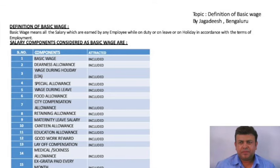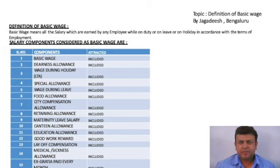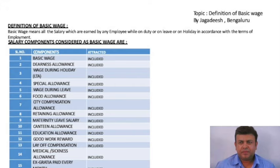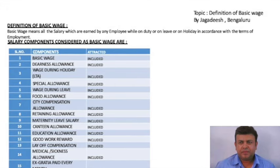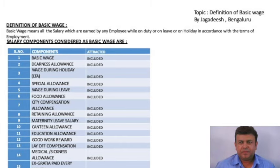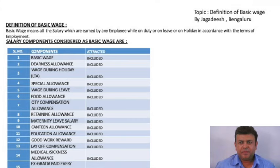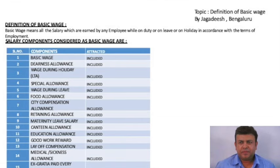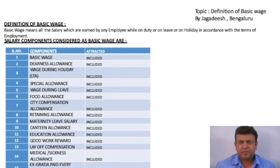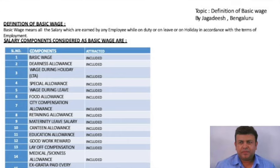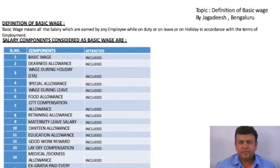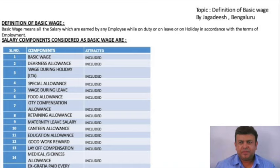Let us see which are the salary components considered as basic wage. Basic wage itself is considered as basic wage. Dearness allowance is considered as basic wage. LTA, that is wage paid during leave, is considered. Maternity leave salary is considered. Good work reward is considered. Lay-off compensation is considered. And even ex-gratia, if it is paid month on month, is considered as basic wage. There are also several types of allowances which come under the definition of basic wage, for which Provident Fund contribution has to be made.